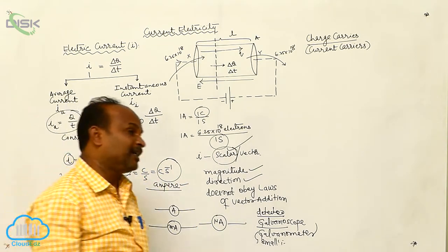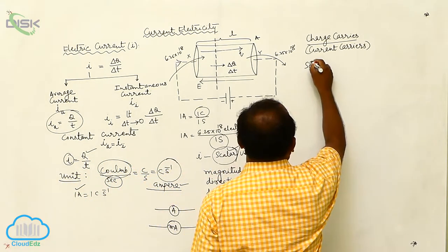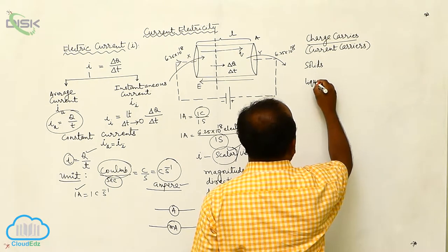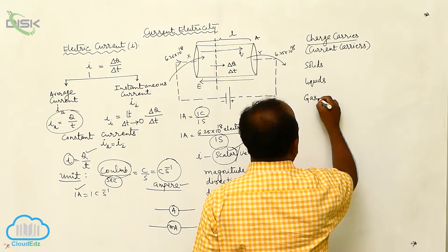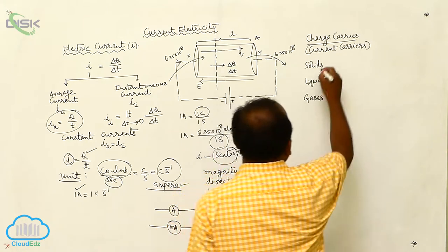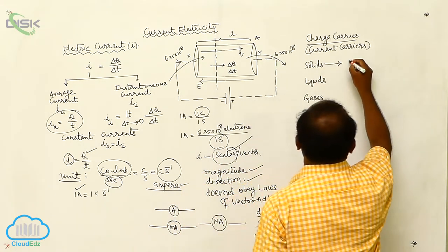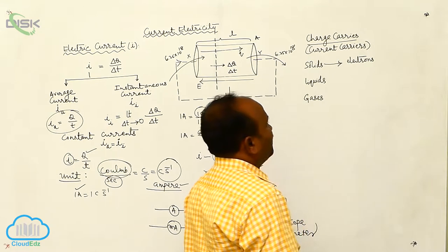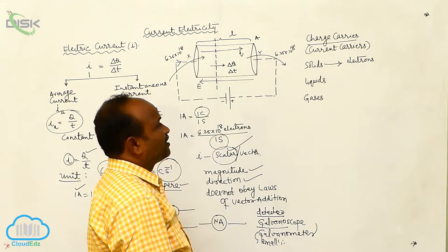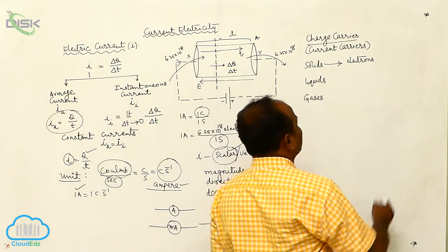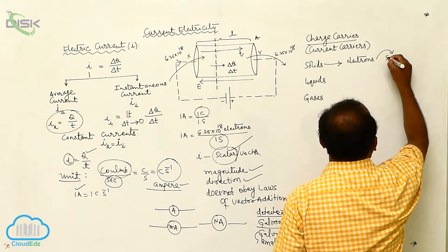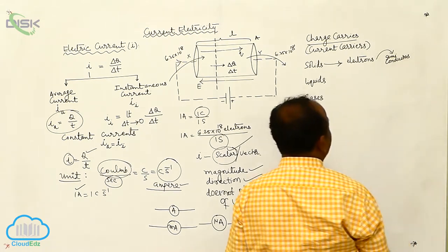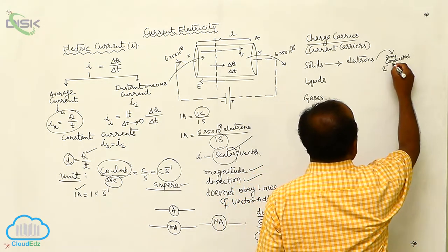What are the current carriers? In solids, the current carriers are free electrons — the current is due to the electrons. In semiconductors, the current is due to the electrons and holes.